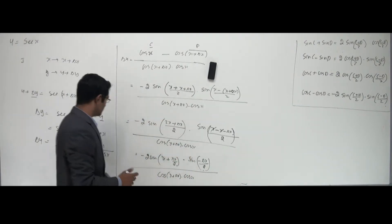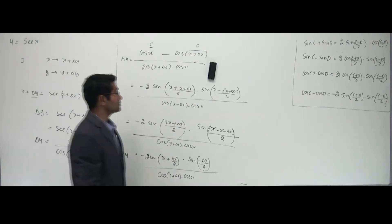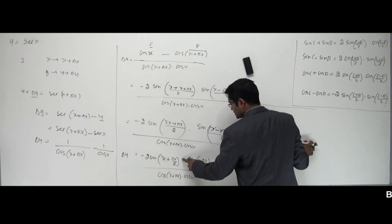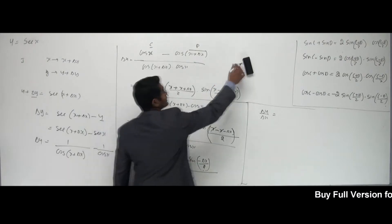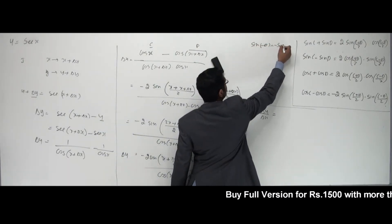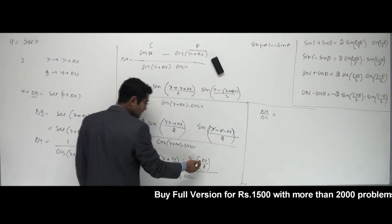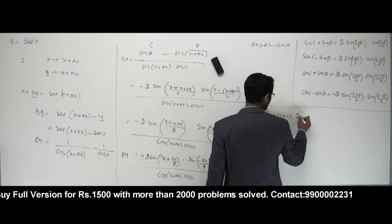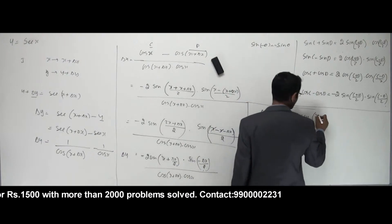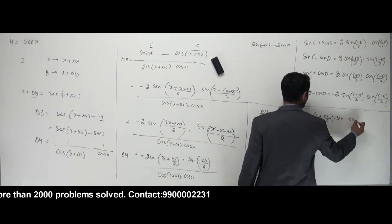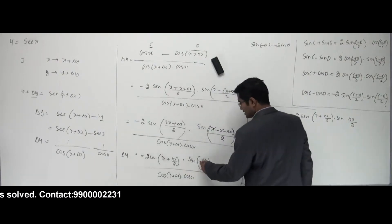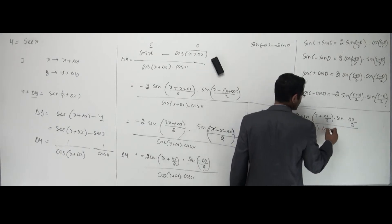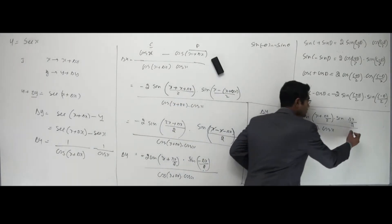Now dividing both sides by delta x. We know that sin(−theta) equals minus sin(theta), so the negative comes out of sin(−delta x/2). That gives us minus times minus, which becomes plus. So we get: 2 sin((x + delta x/2)) times sin(delta x/2), all over cos(x + delta x) times cos x, divided by delta x. Now sin(delta x/2) divided by delta x — to match the formula sin(theta)/theta, I can write delta x as 2 times (delta x/2), inserting a 2 in numerator and denominator.